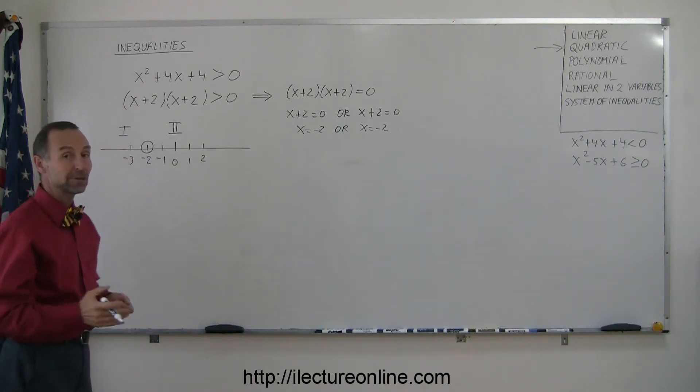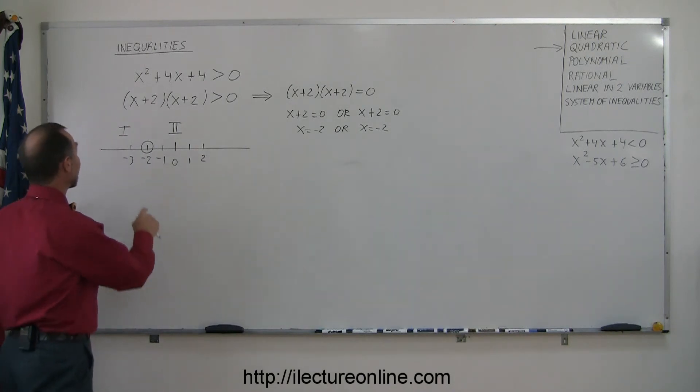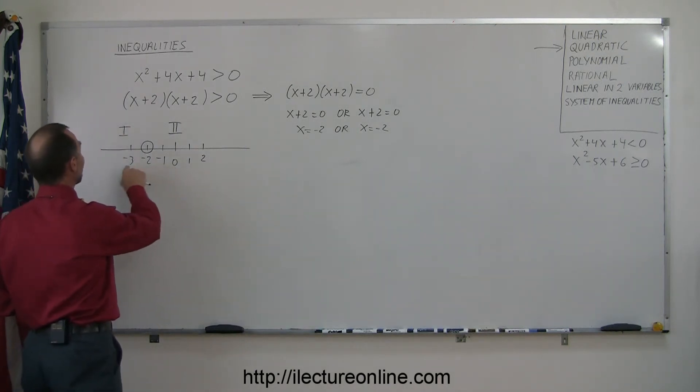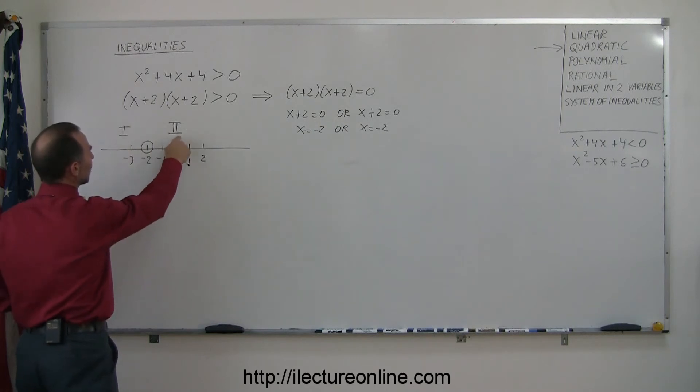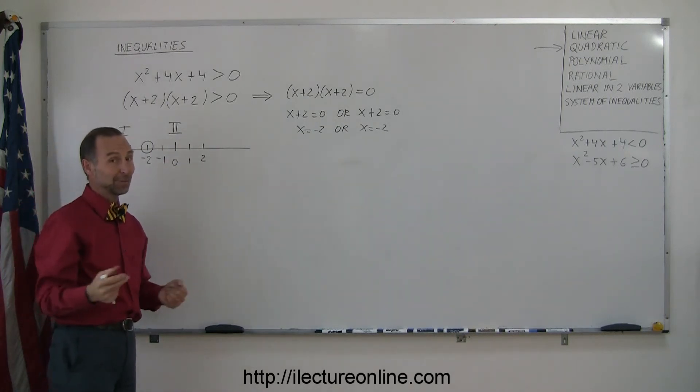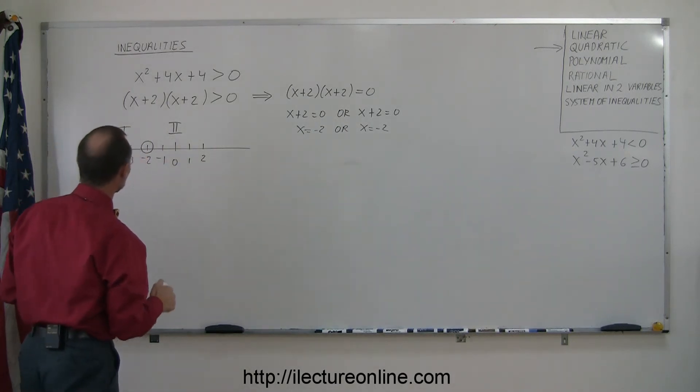So we have two regions. We're going to test for those two regions by plugging in a test sample point. Let's say the number -3 for region one, the number 0 for region two. Anytime you can use a number zero for a test point that's always a good thing, makes it easy.